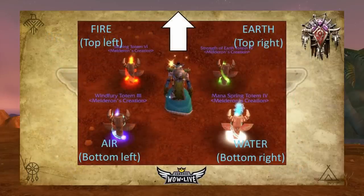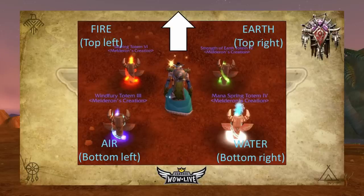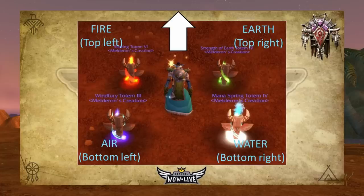Totems of each element type are always placed in the same position around you. The fire totem is in the top left, the earth totem is in the top right, the air totem is the bottom left, and the water totem is in the bottom right. This structure is always the same. So if there's a hated enemy to your top left and you put a Searing Totem down and it's in range of that enemy, it will hit it and cause you to be in combat.